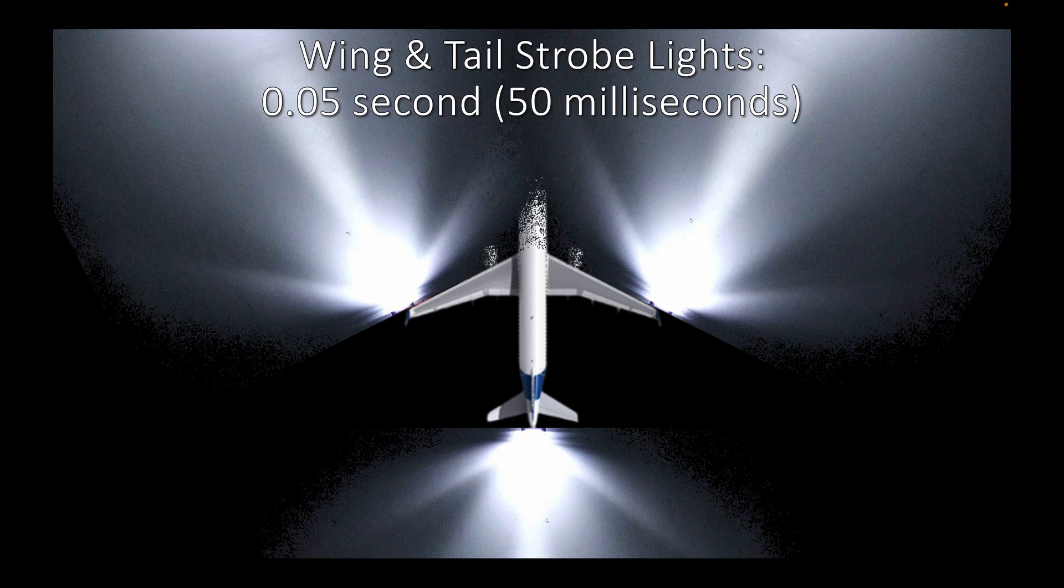This is how the wing and tail strobe lights look like for 50 milliseconds. Very bright white lights at the wingtips and at the tail.